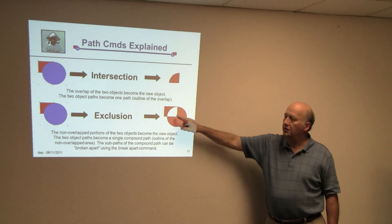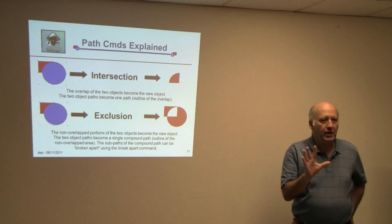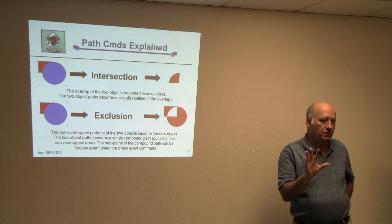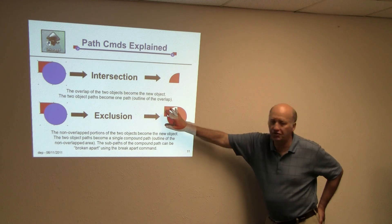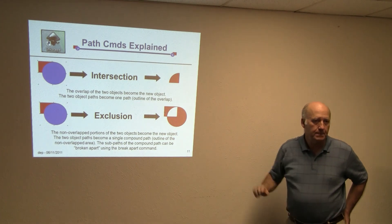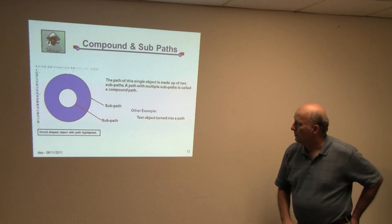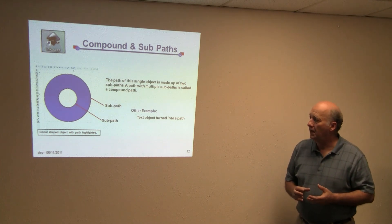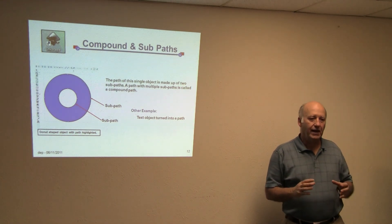Exclusion is the opposite of Intersection — it left everything but where they overlapped. This also retained the path. There's a command called Break Apart that will break this into separate shapes so I could have this shape and that shape independently. When a path has two parts that aren't continuous...